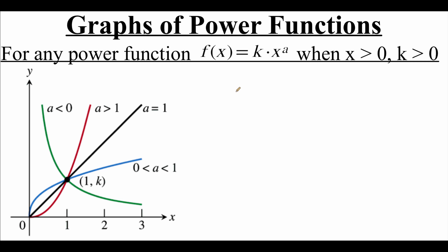We're looking at power functions here, and remember, power functions have the form f of x equals k times x to the a power. These graphs specifically refer to when both our x and k values are greater than zero, so where those things are positive. There are a few properties to notice about all of these graphs. The first is that regardless of which graph we look at, all of these graphs contain the point one comma k.